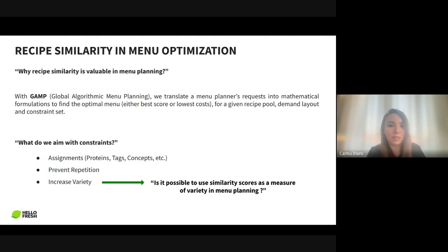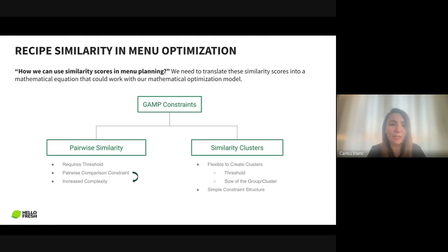A similarity tool that can measure variety on the menu would benefit us in creating constraints and evaluating different menus in menu optimization. Our challenge when seeing these similarity scores: how can we use them in menu planning? We need to convert them into constraints — mathematical formulations — to use in mixed integer programming. We have two different approaches for that.